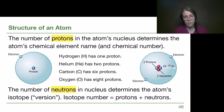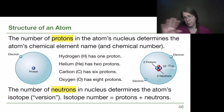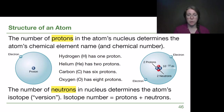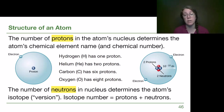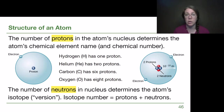The number of protons determines the element name. Hydrogen, if we looked it up on the periodic table, would have the number one — it has one proton. Oxygen has the number eight, telling us it has eight protons, no matter how many neutrons are in the nucleus. The number of neutrons determines the version — the special science name for versions of elements is isotopes. The isotope number is protons plus neutrons.